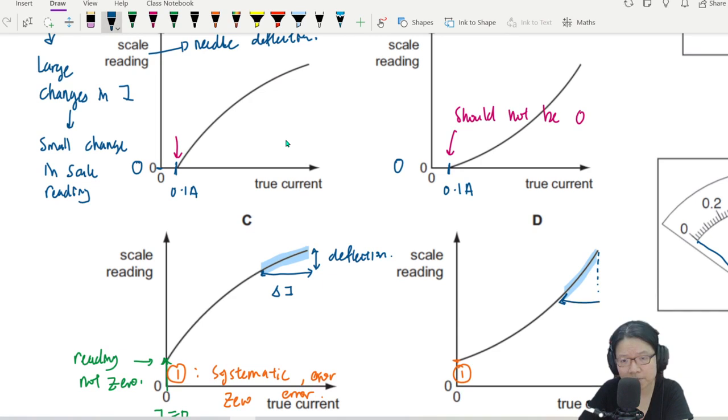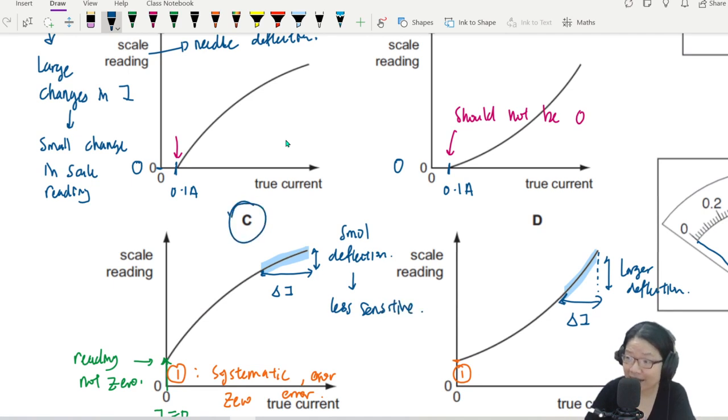But here, larger deflection. This is small deflection. So small deflection means less sensitive. That's why the answer is C. Larger deflection means more sensitive. You change a bit of current, immediately the scale reading change a lot. So check the gradient of the graph.